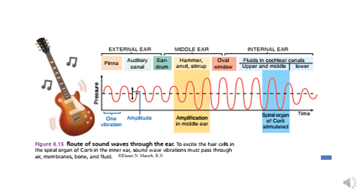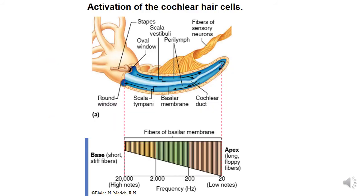On this slide you can see how vibration conducted by the pinna and auditory canal, with amplification, then amplification in the middle ear, then through the oval window comes to the fluid in the cochlear canals and stimulates the organ of Corti. On the base of the cochlea, short and stiff fibers detect high notes. On the apex of the cochlea, long floppy fibers detect low notes.